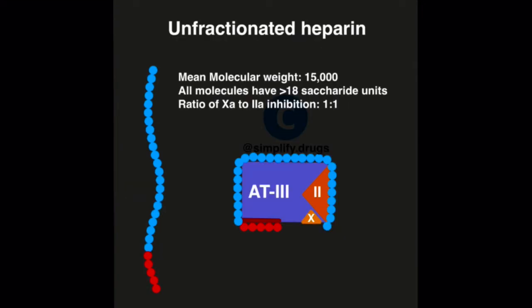Let's look into unfractionated heparin preparations. These preparations have a mean molecular weight of 15,000 and that would mean almost all molecules have more than 18 saccharide units. As you can see here, along with binding to the pentasaccharide sequence of antithrombin 3, these molecules are long enough to bind both antithrombin 3 and factor 2A. This would ensure that the ratio of 10A to 2A inhibition is 1 is to 1.